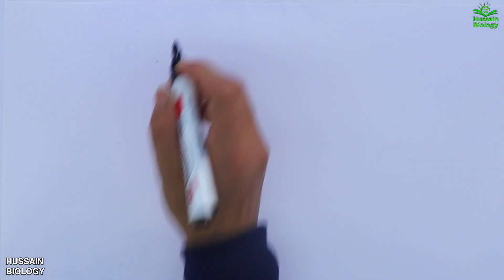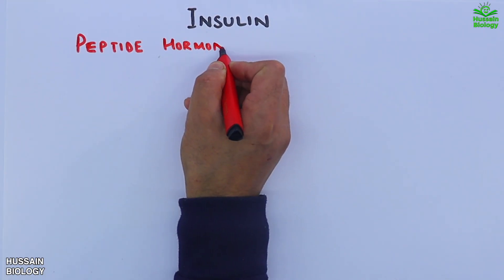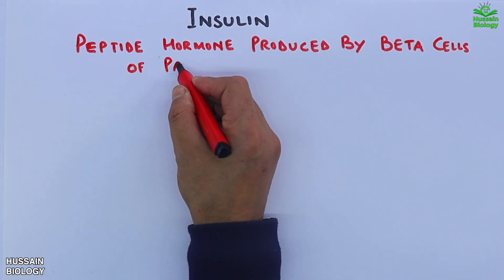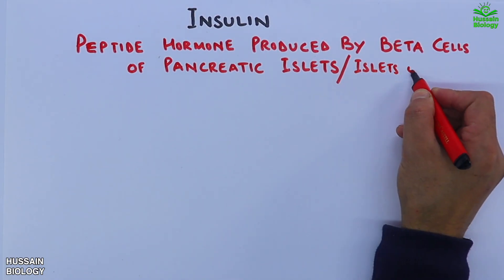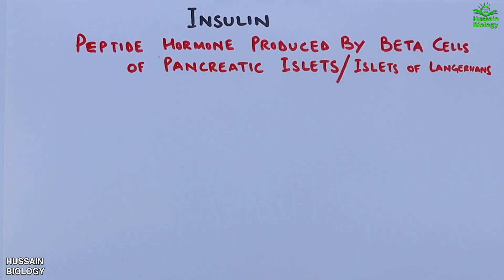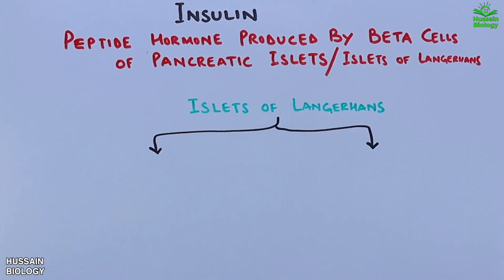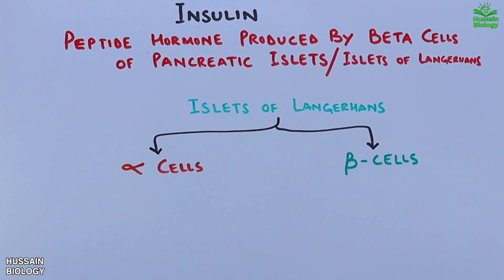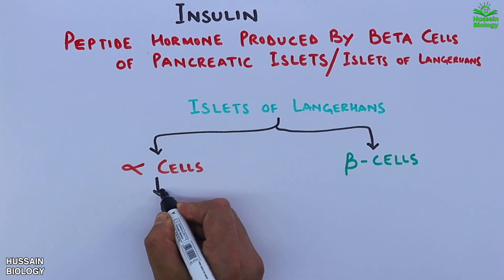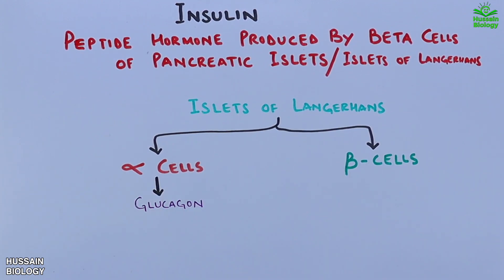In this video we are going to discuss about insulin and the associated disorders. Insulin is a peptide hormone produced by beta cells of pancreatic islets, or islets of Langerhans. The islets of Langerhans has two important types of cells: alpha cells and beta cells. The alpha cells produce glucagon whereas the beta cells produce insulin.